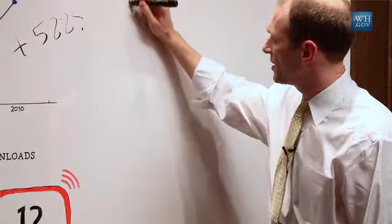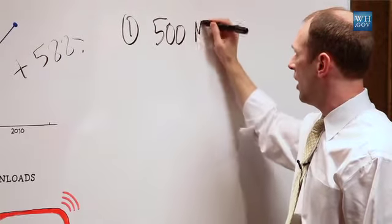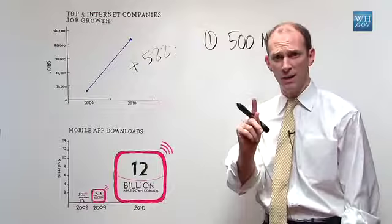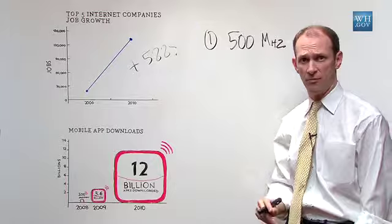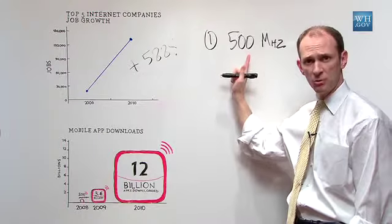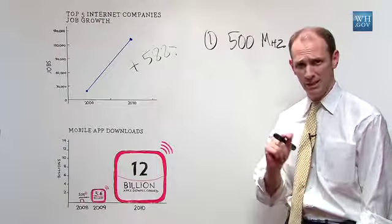The first is the government will make available a big chunk of airwave spectrum, 500 megahertz, that will serve as the backbone of a new business platform. We'll auction this spectrum off so it will actually also reduce the deficit by billions of dollars.